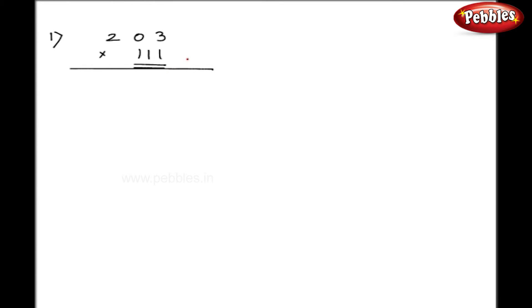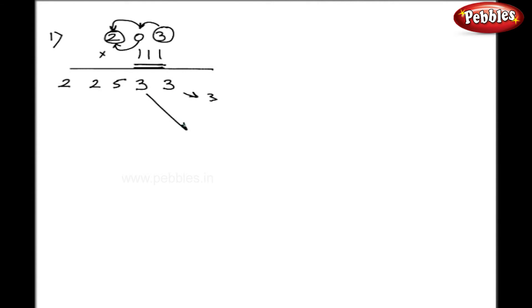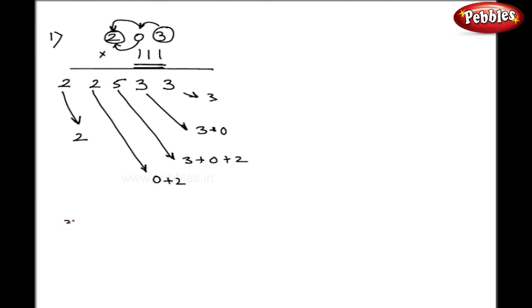Now let us take an example with multiplier 111. I will take 203 multiplied by 111. The method is exactly the same. Only in this case, I have to go up to addition of 3 digits. As a first step, I write 3. Then 3 plus 0 is 3. Then, as I have 3 digits in the multiplier, I go up to 3 digits: 3 plus 0 plus 2 is 5. Now 0 plus 2 is 2, and last 2 as it is. So my final answer is 22533, obtained in just one step.